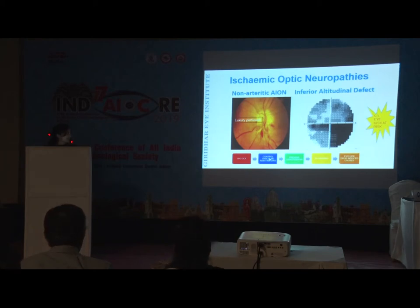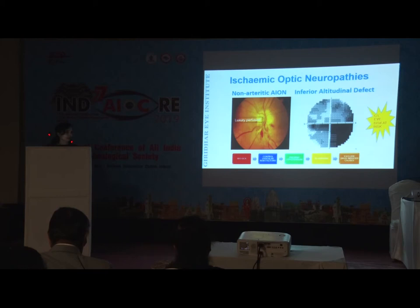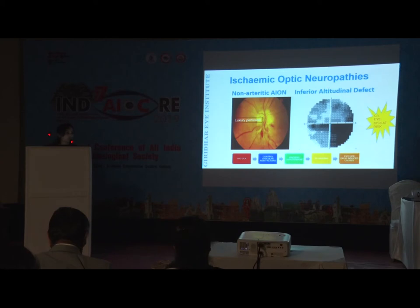AION is a sudden vascular event compared to optic neuritis which has a subacute onset. The other eye gives a clue: there is a disc at risk — a small or absent optic cup — and an inferior altitudinal defect is usually seen. Identify and control the systemic risk factor. Nocturnal hypotension often precipitates the event, so advise patients to space out their antihypertensives and not take them immediately before sleep.